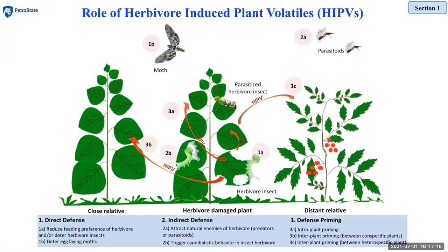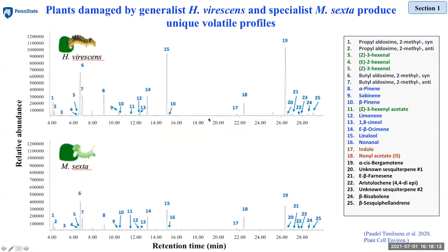These volatiles function in multiple ecological roles in the plant-insect system. They deter herbivores and egg-laying moths, and reduce the feeding preference of herbivores as a form of direct plant defense. They also provide herbivore-specific information to predators and parasitoids of the herbivore, serving as indirect defense. In addition, these plant volatiles prime nearby neighboring plants to respond faster and more strongly to subsequent herbivore damage.